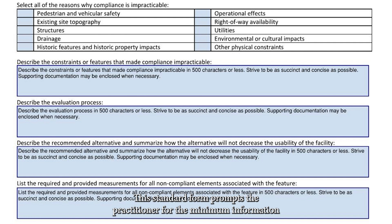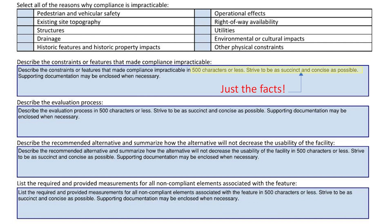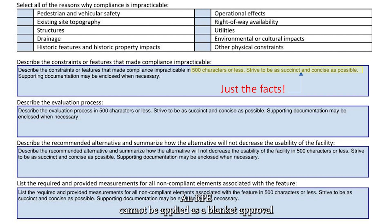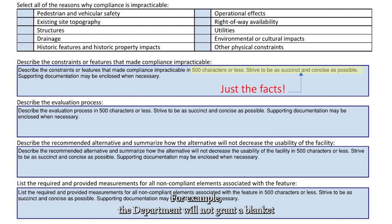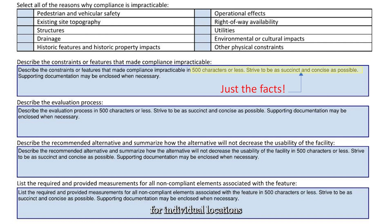This standard form prompts the practitioner for the minimum information the Department determined necessary to document non-compliant locations. It is important to stick to the facts and provide supporting documentation. All RPEs submitted must be site-specific to the conditions and constraints encountered at the location in question. An RPE cannot be applied as a blanket approval on a project-wide or program-wide basis. For example, the Department will not grant a blanket project-wide exception for a pavement rehab or similar scoped project. Exceptions to the accessibility standards will only be provided for individual locations on the project which have been analyzed and deemed to be structurally infeasible.